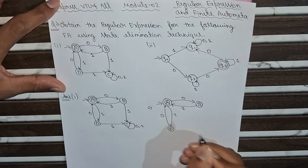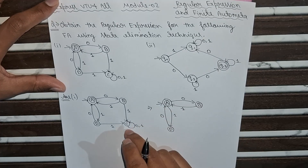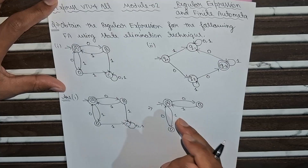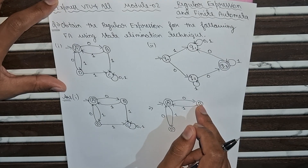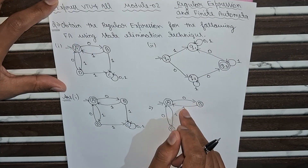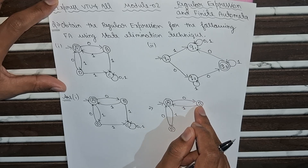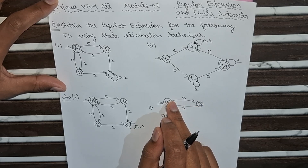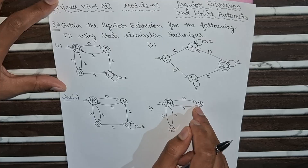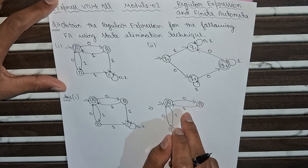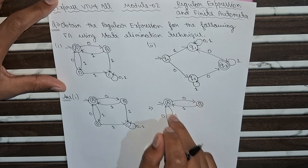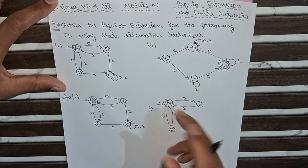After eliminating C, we have: from B, input 1 goes to D, and from D to A with input 0. We have eliminated the C transition state. It is now clear from the figure that if we input string 0,1 the machine goes to B and comes back to A, and this process can be repeated.